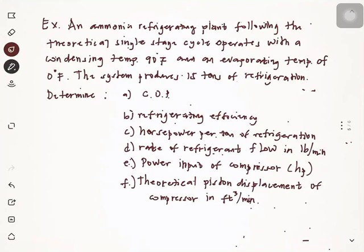Here is an example problem: An ammonia refrigerating plant following the theoretical single stage cycle operates with a condensing temperature of 90°F and an evaporating temperature of 0°F. The system produces 15 tons of refrigeration. Determine: (a) coefficient of performance, (b) refrigerating efficiency, (c) rate of refrigerant flow in lb/min, (e) power input of compressor in horsepower, and (f) theoretical piston displacement in ft³/min.